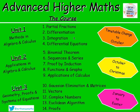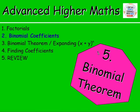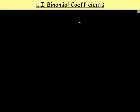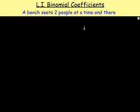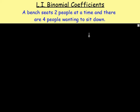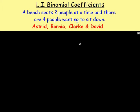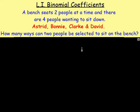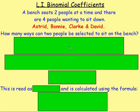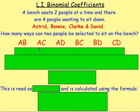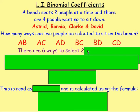Chapter five, lesson number two: binomial coefficients. To introduce this, imagine a bench — just a small bench, big enough for two people. There are four people that want to sit down: Astrid, Bonnie, Clark, and David. How many ways can two people be selected from this group of four to sit on the bench? You could have Astrid and Bonnie, Astrid and Clark, Astrid and David, Bonnie and Clark, Bonnie and David, or Clark and David — six different ways.